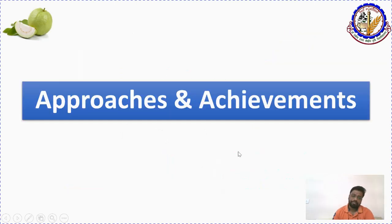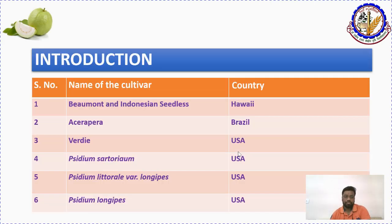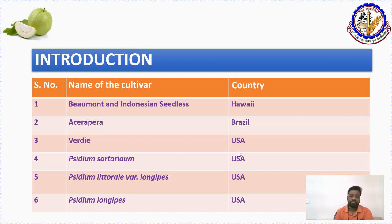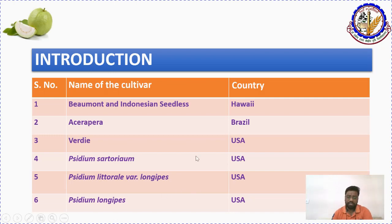Next we will see the achievements made in guava breeding. Different approaches will be discussed. The first one is introduction — introducing a variety to a new region from a different country, state, or institute. There are few species and varieties that have been introduced from different countries.